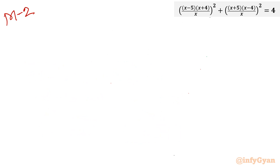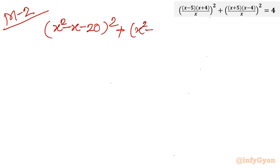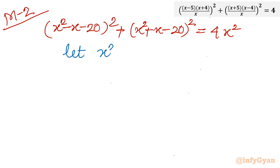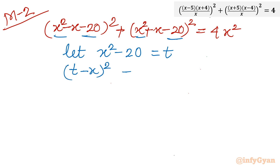Method 2. I will consider the numerators expanded: (x squared minus x minus 20) whole squared plus (x squared plus x minus 20) whole squared equals 4x squared. Now I will use substitution. Let x squared minus 20 equal t. The first bracket becomes (t minus x) whole squared and the second becomes (t plus x) whole squared. Keep the right-hand side as 4x squared.